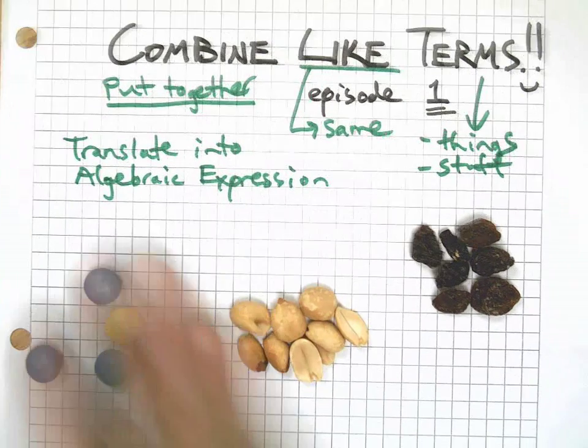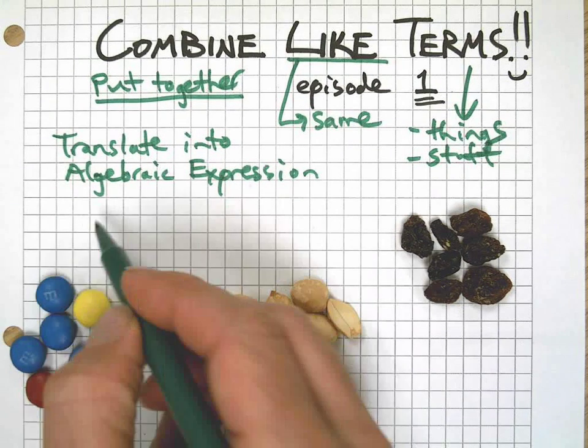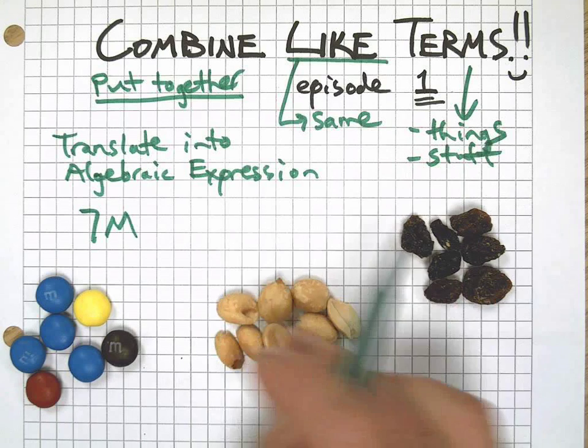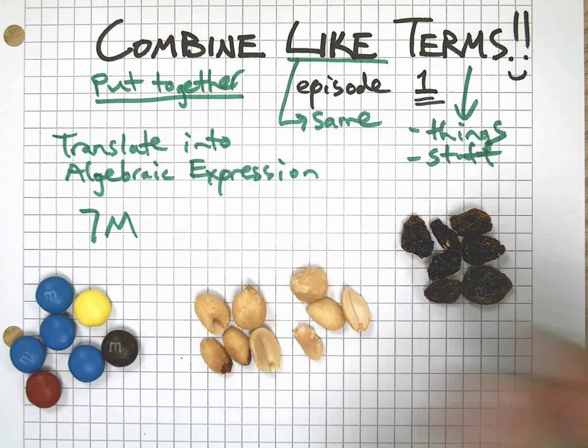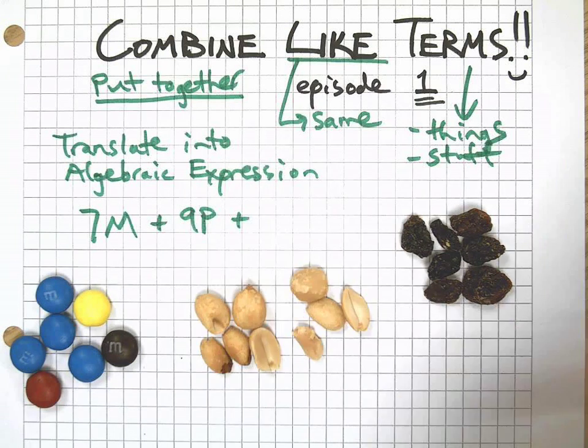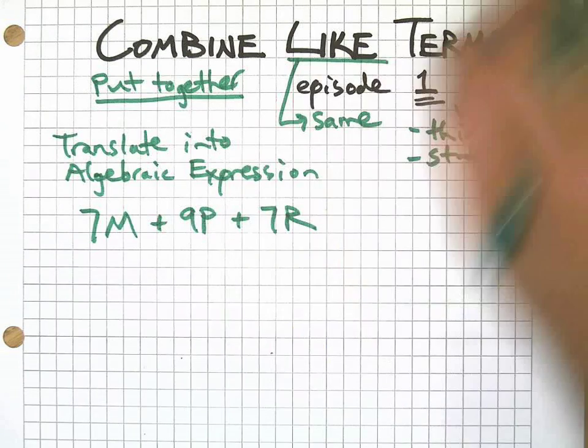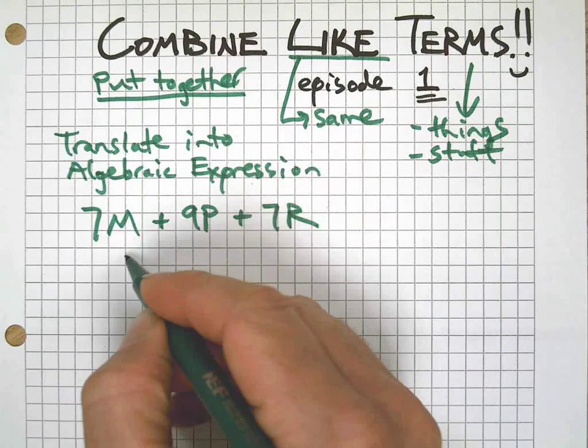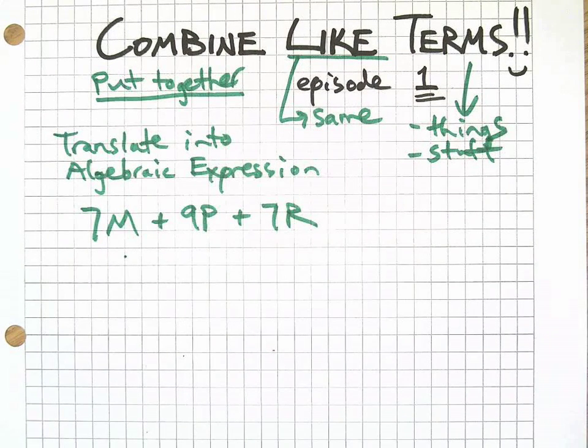So, I've got how many M&Ms before I take them away? Seven. I'm going to use the M to represent M&Ms. I've got nine peanuts. And I have seven raisins. There we go. Now I can take them away. I don't need them anymore because I have variables and numbers to represent those real world things.